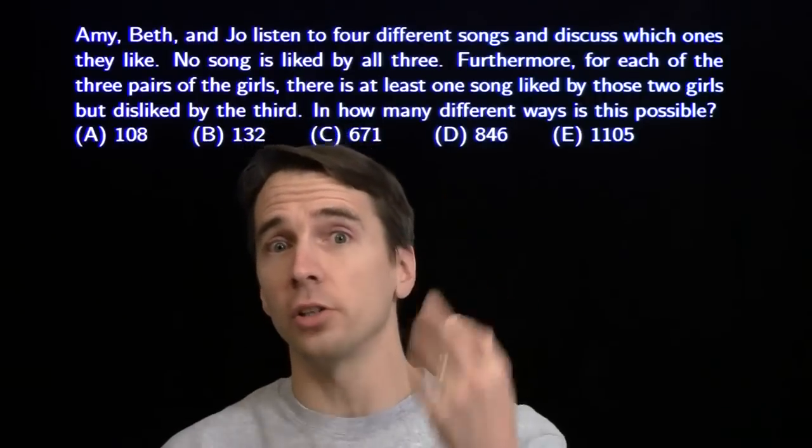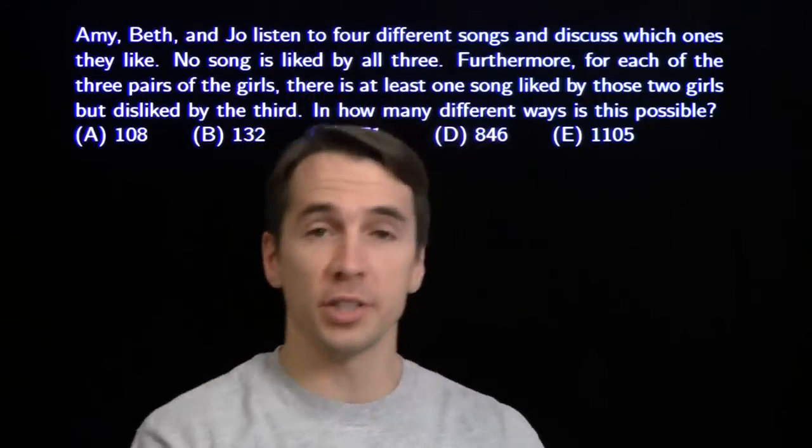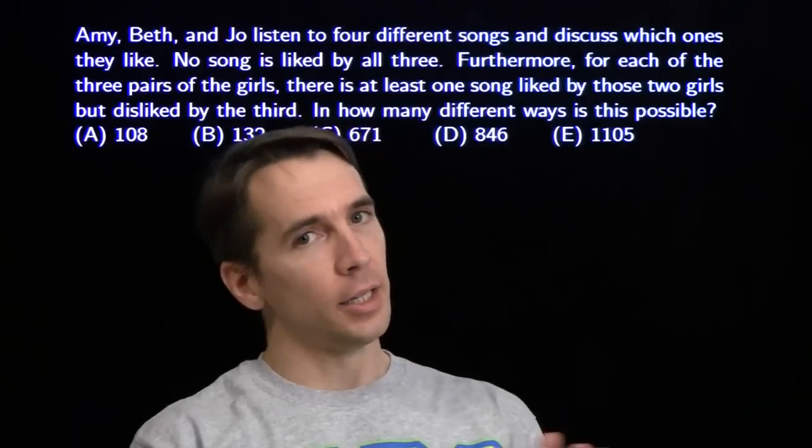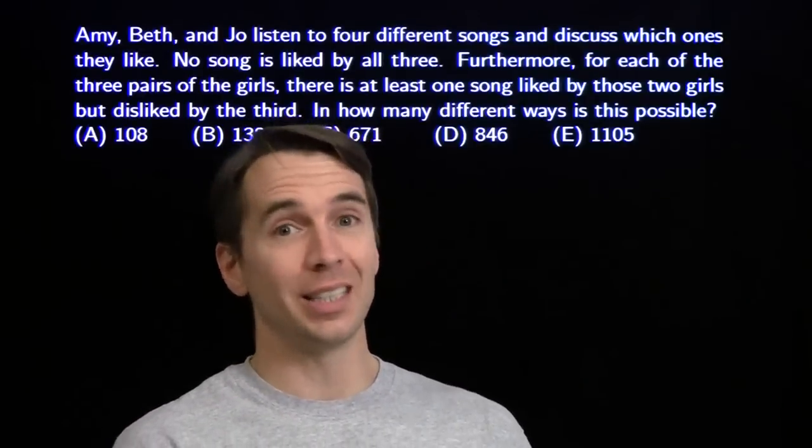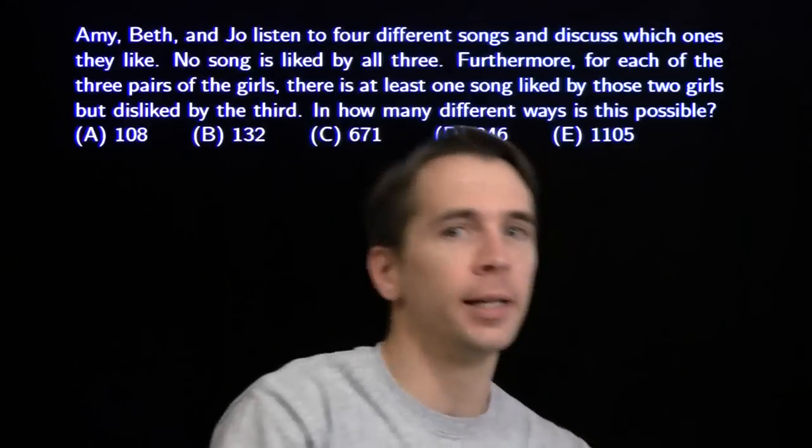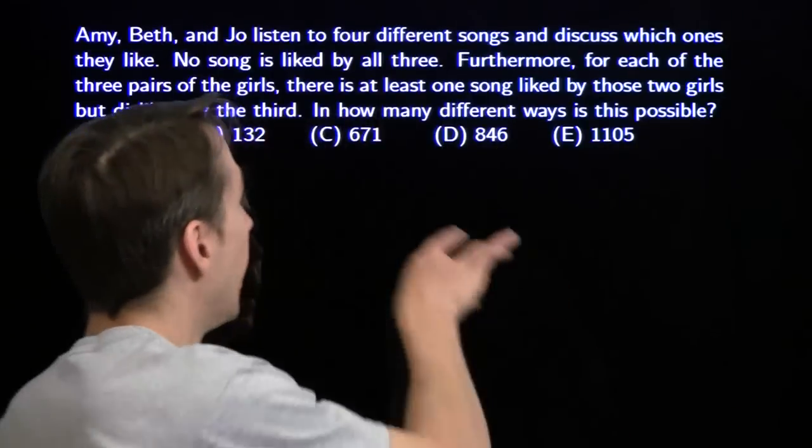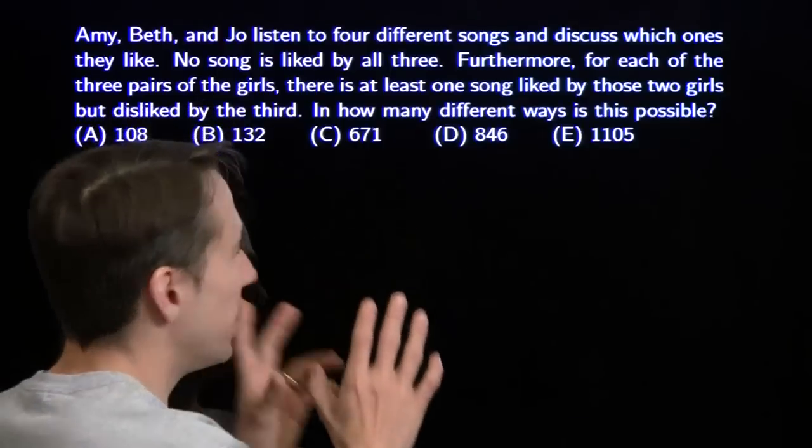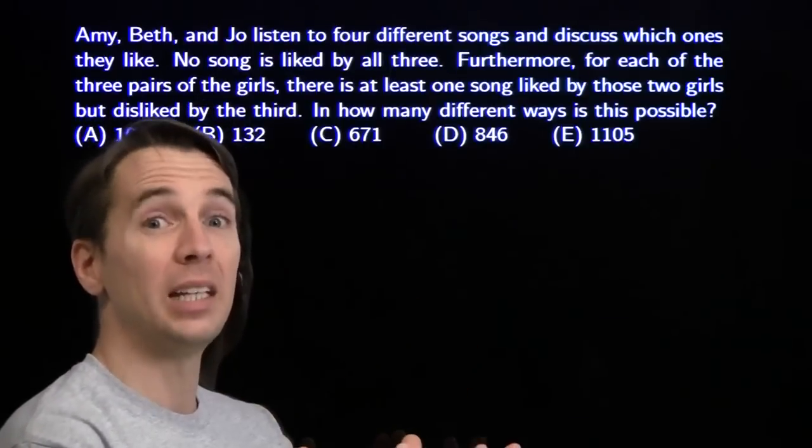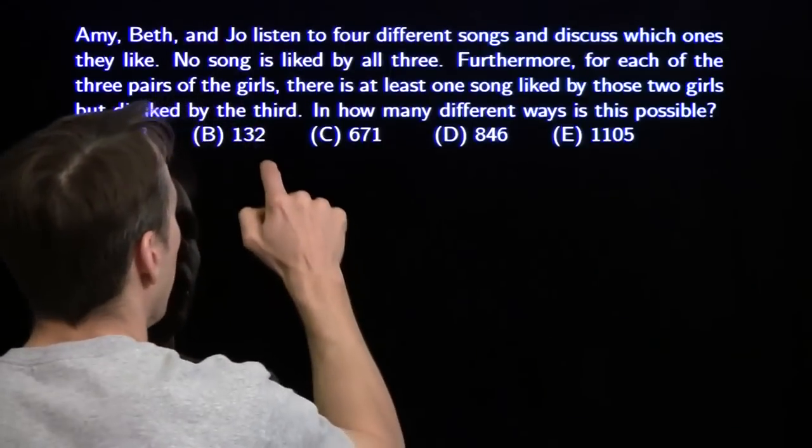We're starting off here. We have three girls listening to four songs, then talking about which ones they like. No song is liked by all three girls, and for each pair of girls, there's at least one song out there those two girls like, the other girl doesn't like. And we want to count how many different ways this is possible. Now, what we're talking about in this problem, what we're trying to count is a number of ways to make connections between girls and songs.